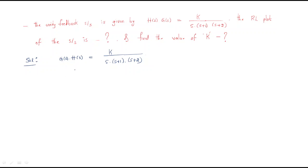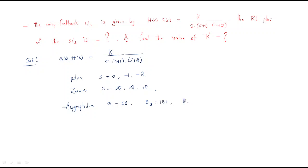To draw the root locus, first we look at the asymptotes. We have three poles: s = 0, s = −1, and s = −2. There are no finite zeros, so we have three zeros at infinity. Therefore we need three asymptotes, and the asymptote angles are θ₁ = 60°, θ₂ = 180°, and θ₃ = 300°.